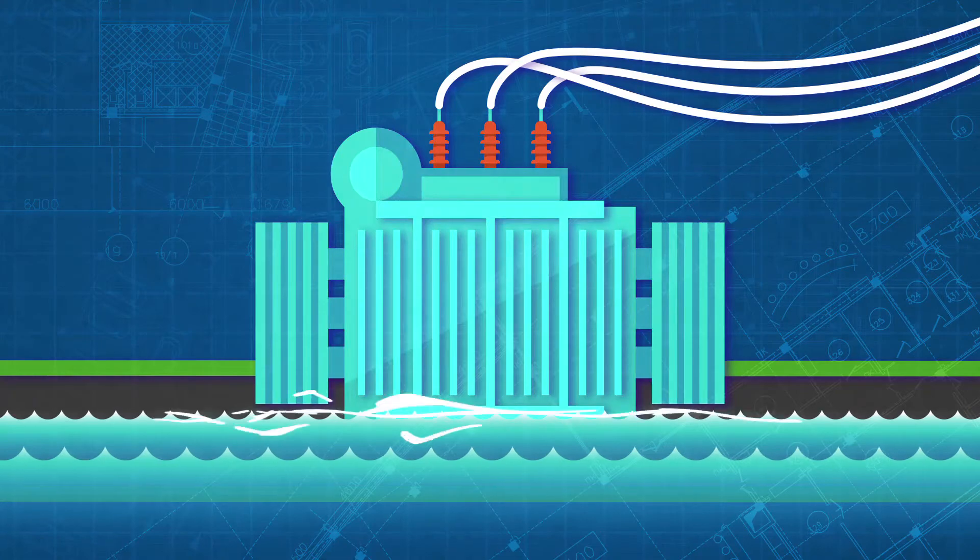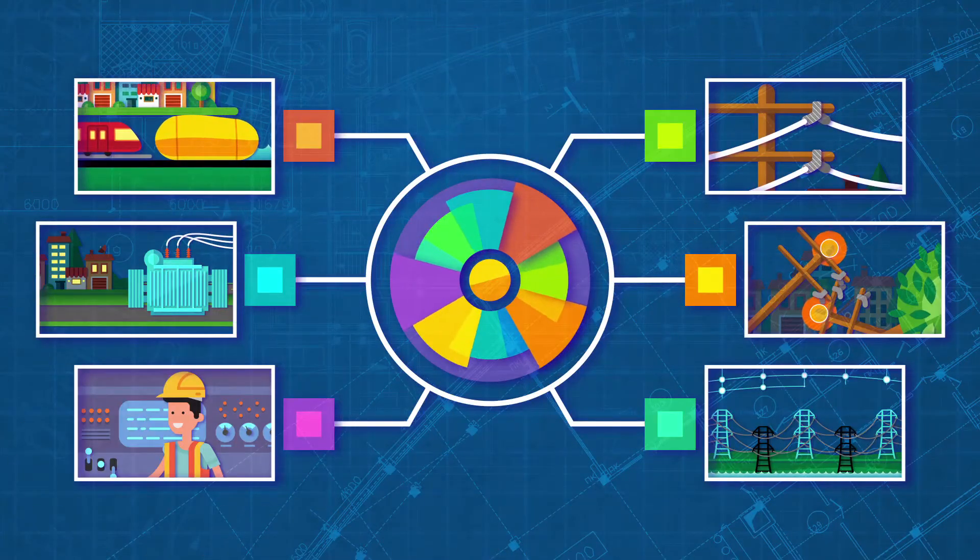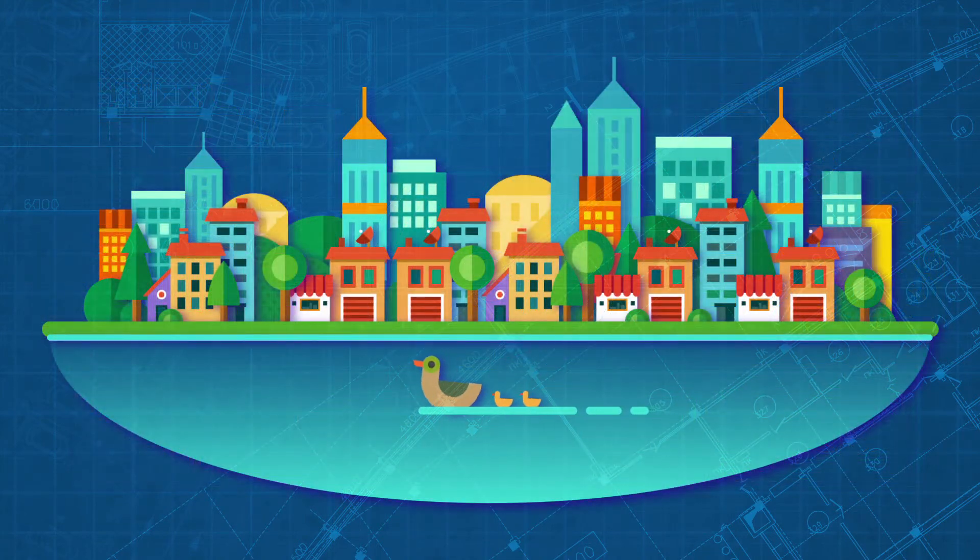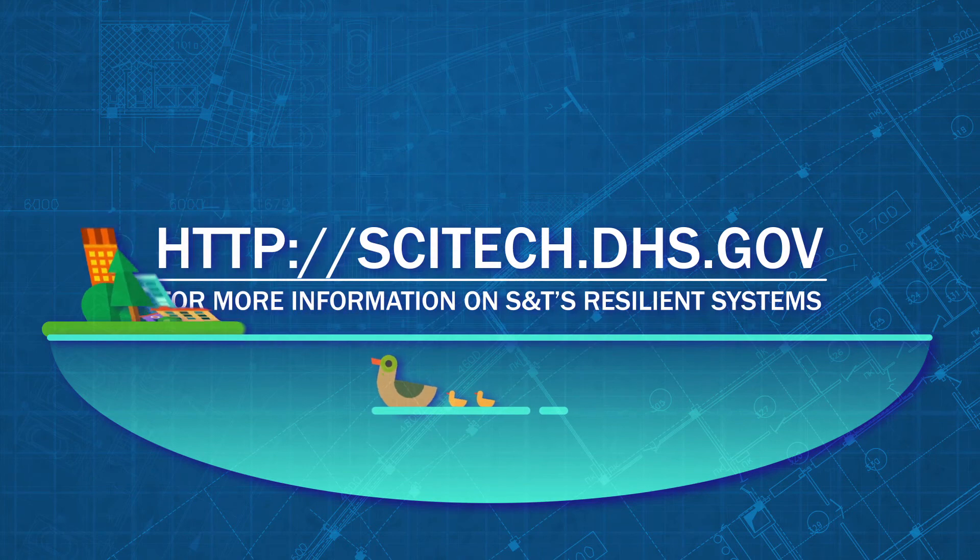Bad things are going to happen, and our critical infrastructure may be threatened. But RAPID helps us make smarter decisions, which reduces damage and recovery time when a hurricane floods the town. At S&T, we've got a plan.